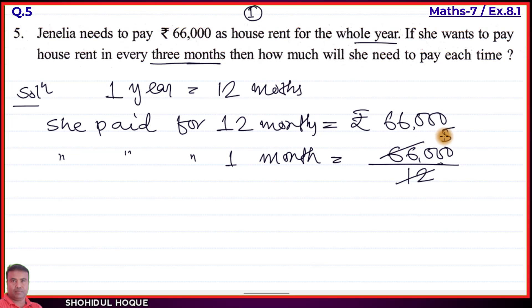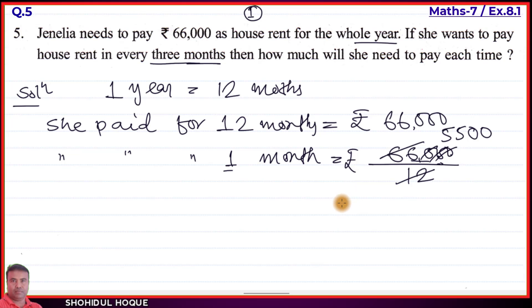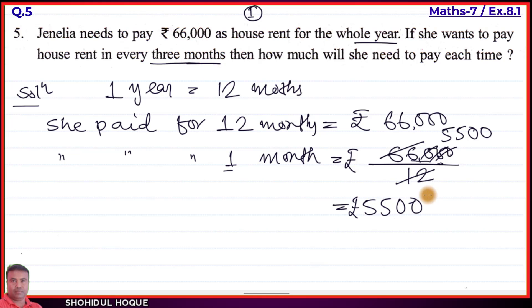66 divided by 12: 12 times 5 equals 60, remainder 6. Bringing down: 60 divided by 12 equals 5. So one month's rent equals rupees 5,500. Now for three months, we multiply by 3.